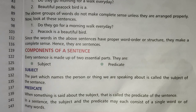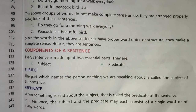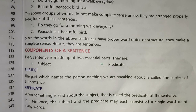So dear students, as you know, every sentence is made up of two essential parts. They are subject and predicate. If you want to form a sensible and meaningful sentence, then you will need to learn two things: subject and predicate. So now let's go and find out what they are.